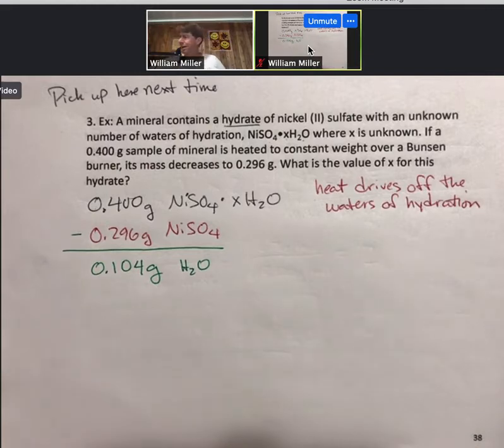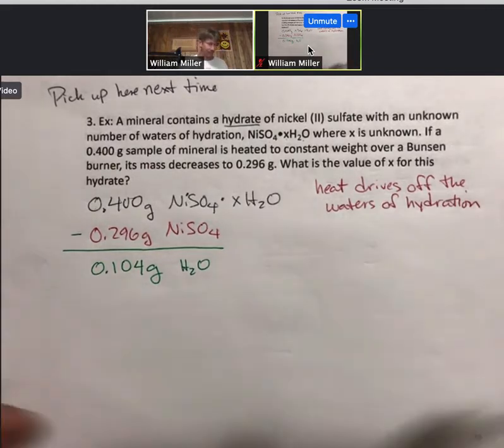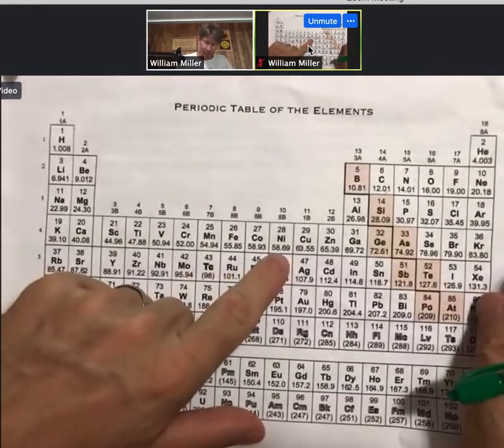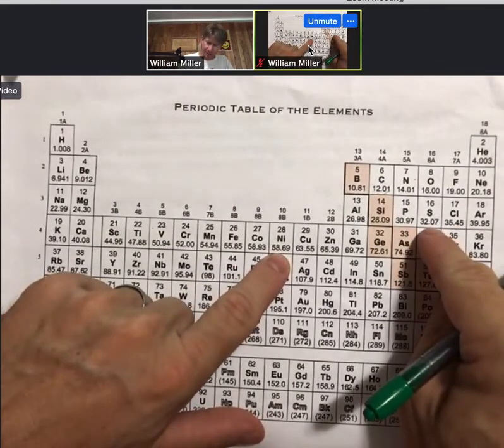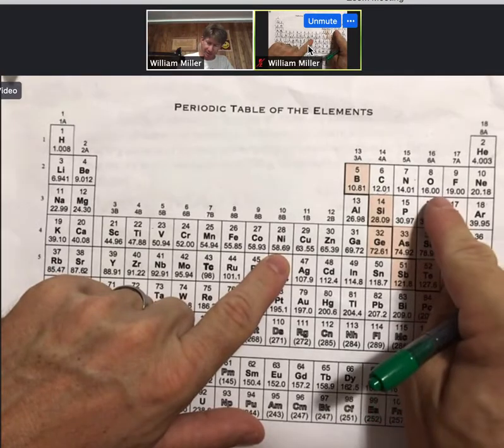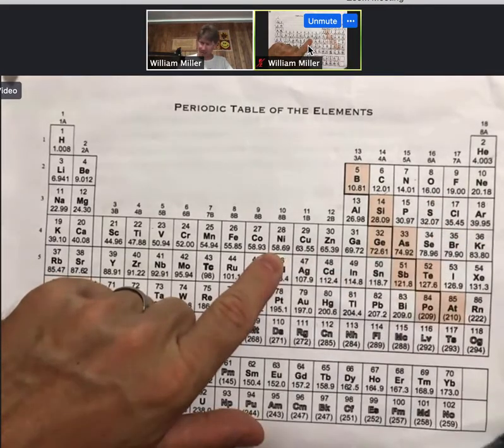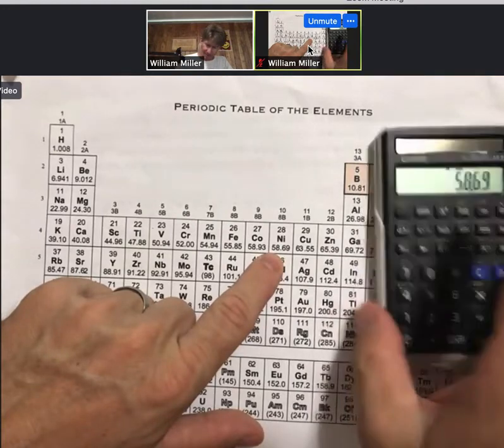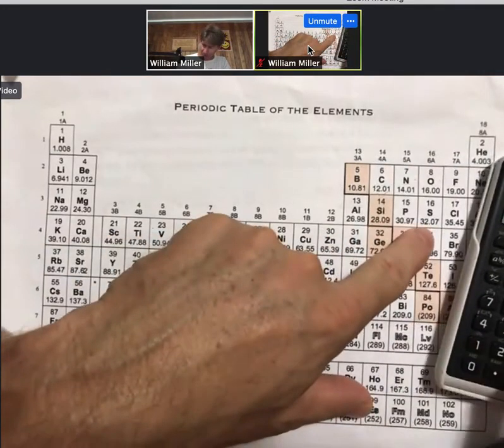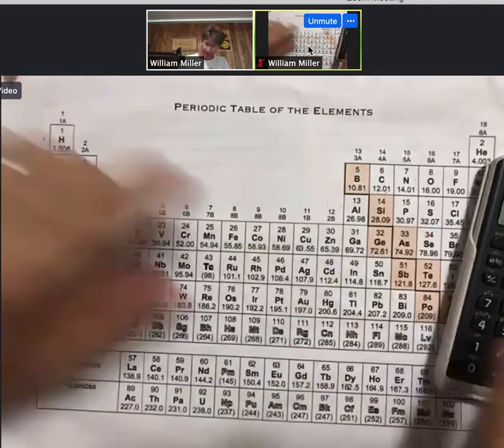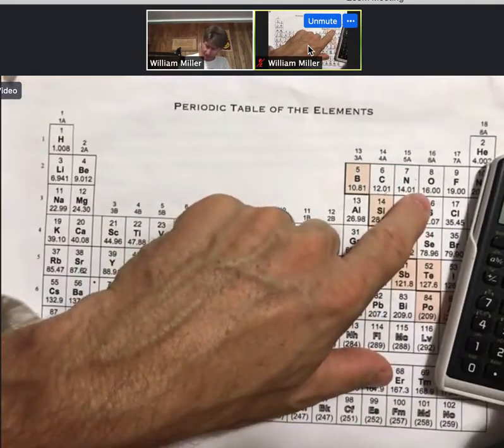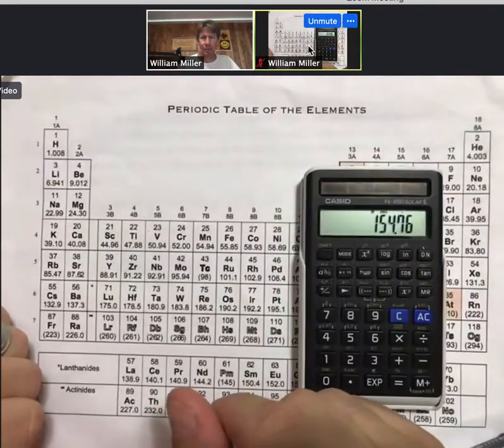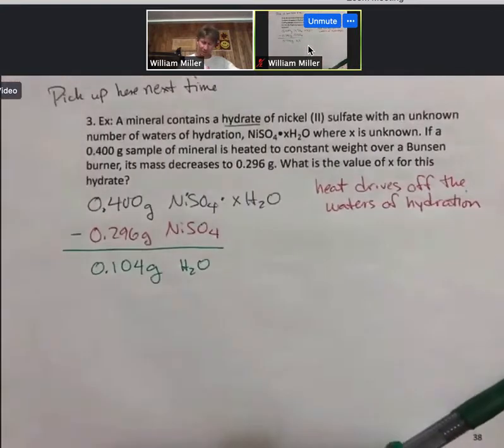We do this a lot. Almost any time you have grams and you know the formula of something in this class, you're turning it into moles and you need a molar mass. I've got my periodic table right here. We have one nickel, one sulfur, and four oxygens. We'll put those together: 58.69 plus 32.07 plus 4 times 16.